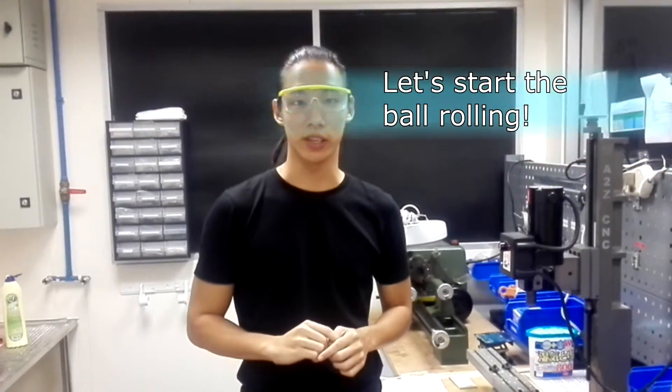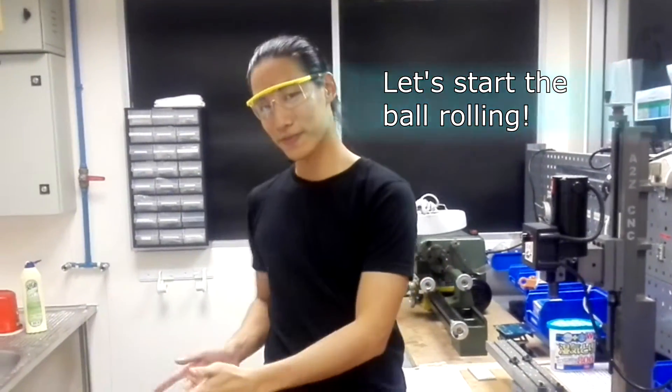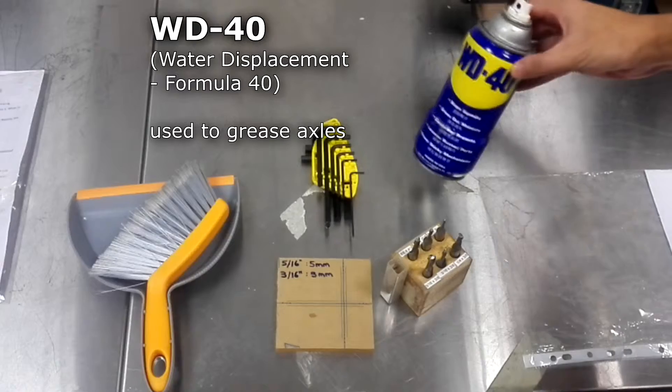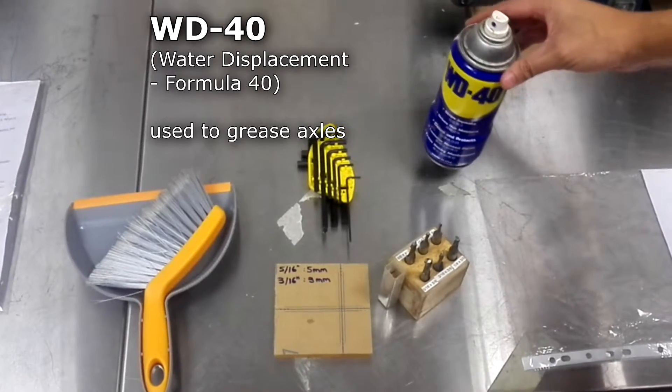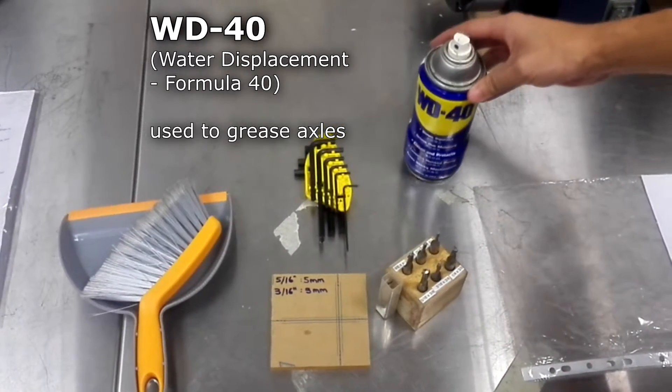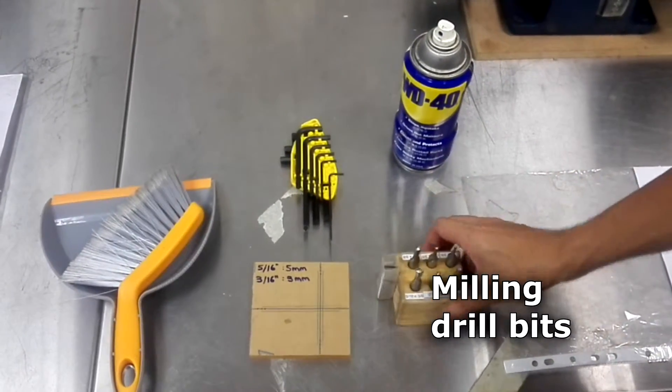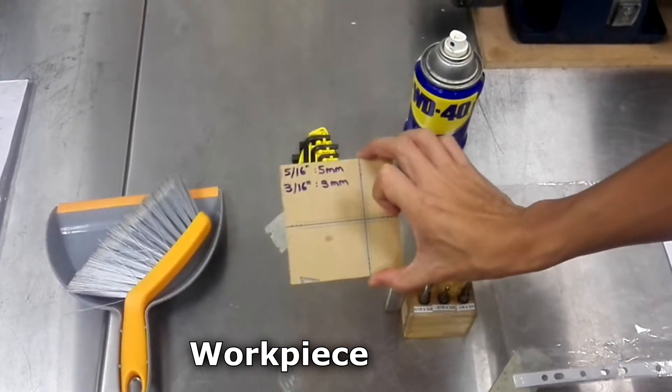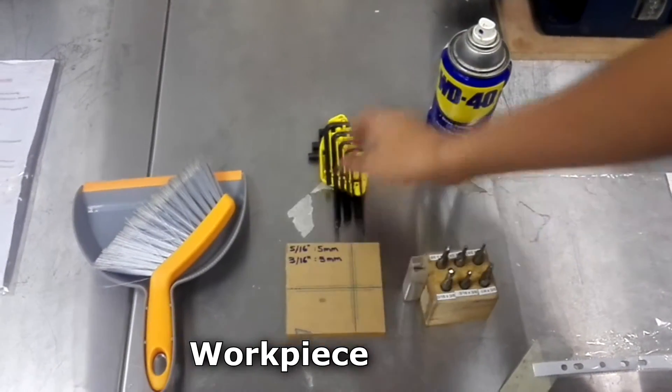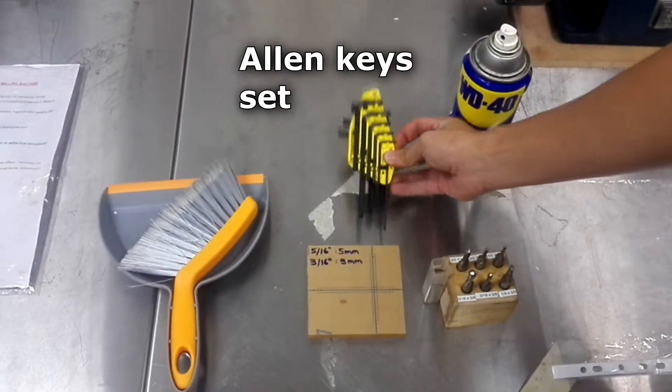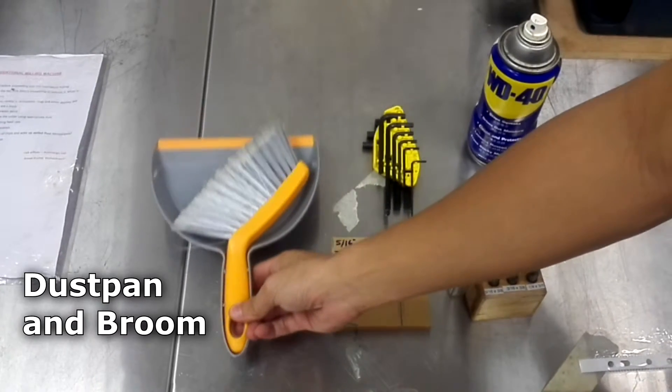Let us look at what equipment we need to use for today's session. We have a can of WD-40, this is grease, your milling blades, your workpiece, a set of allen keys, and a dustpan and broom.